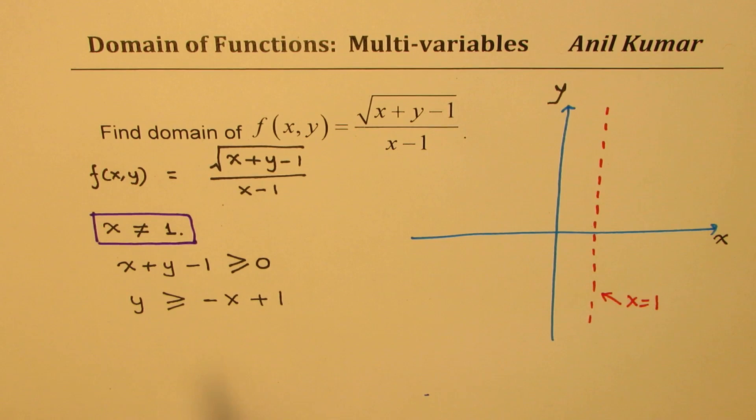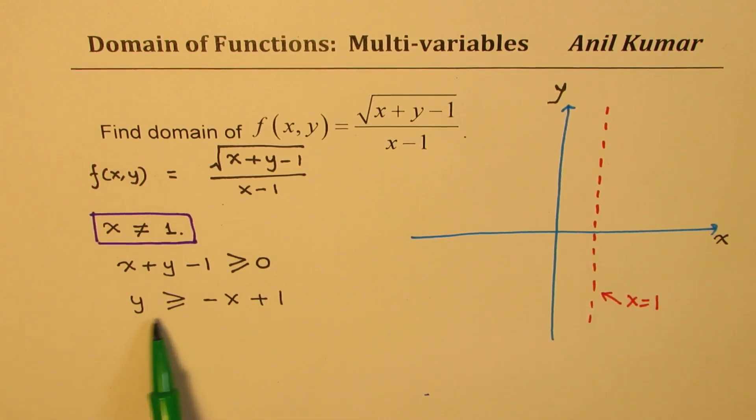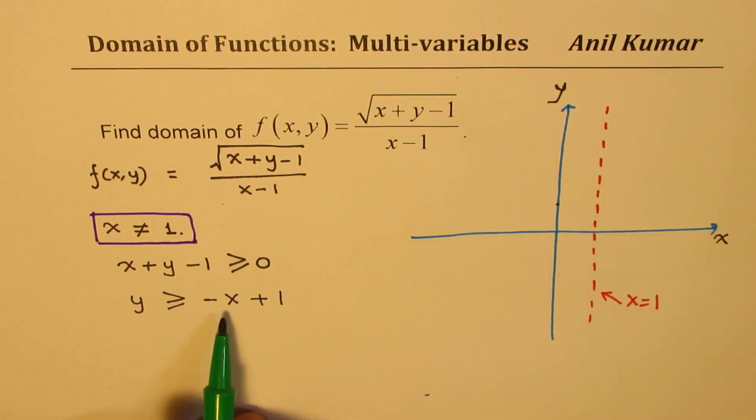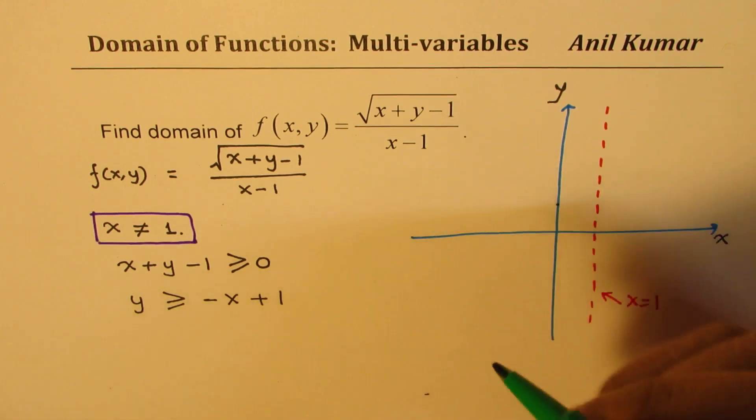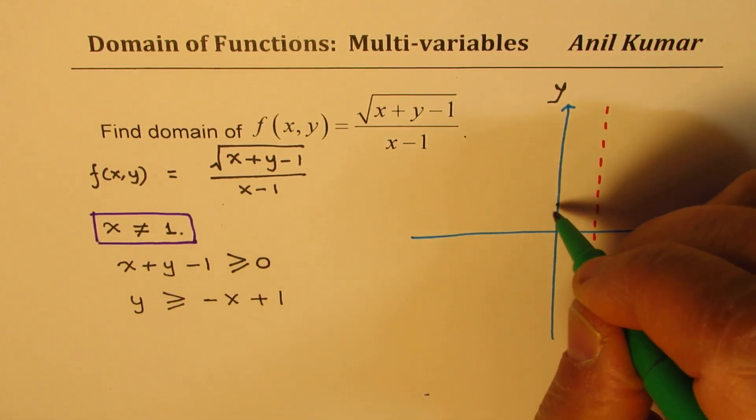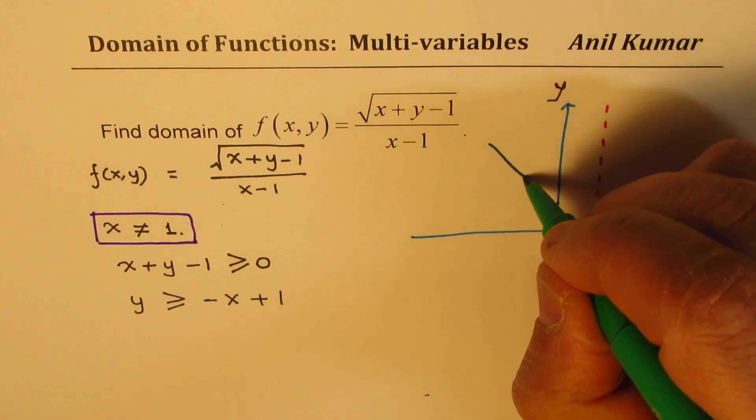So now let us try to sketch the line, which is y greater than or equal to minus x plus 1. So plus 1 means that becomes your y-intercept. Minus means slope of minus 1. Minus x. So it will go through this point. So we could draw a line here, which is kind of like this.